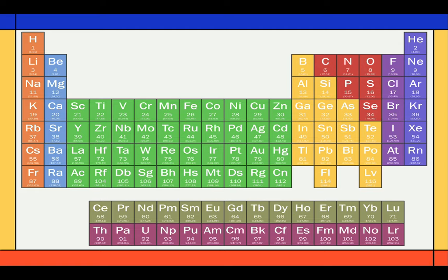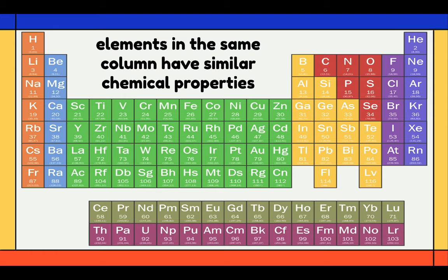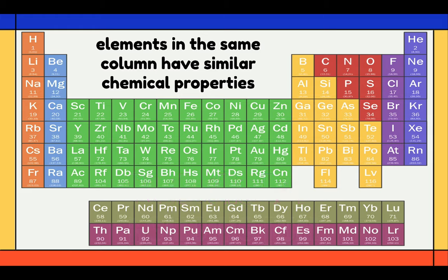Elements in the same column have similar physical and chemical properties. You have to remember that the periodic table is governed by the periodic law, which states that physical and chemical properties of the elements recur in a systematic and predictable way when the elements are arranged in order of increasing atomic number. The periodic law is considered to be one of the most important concepts in chemistry — it helps chemists to predict how an element will behave.